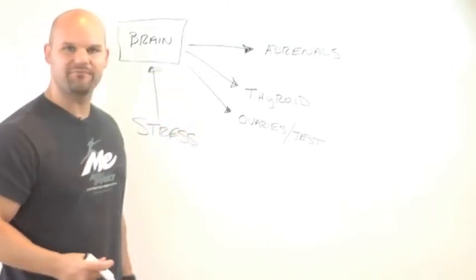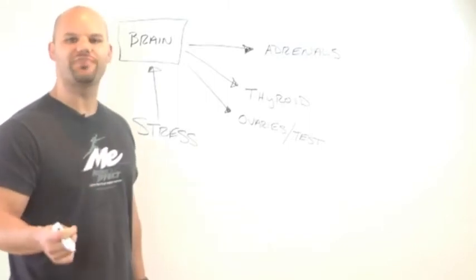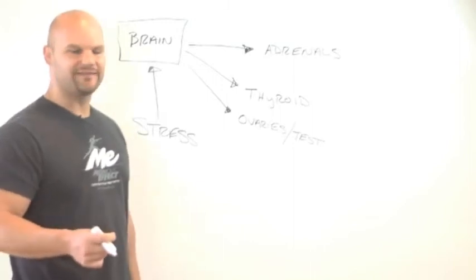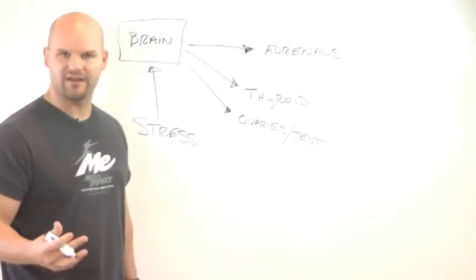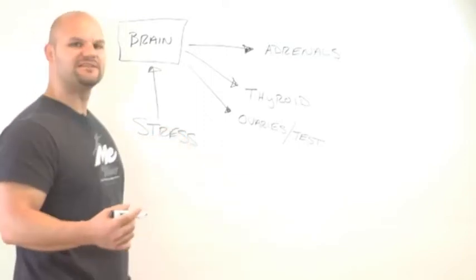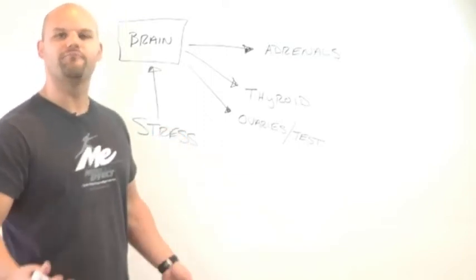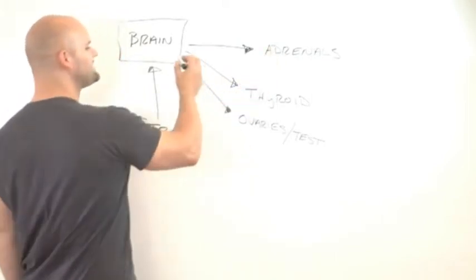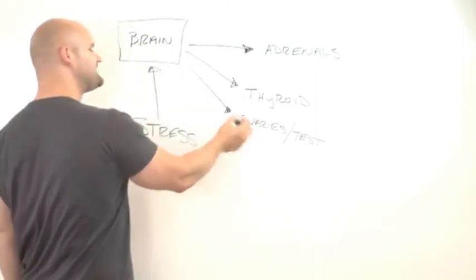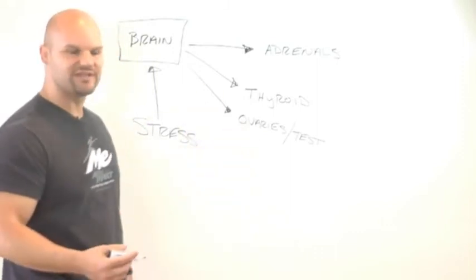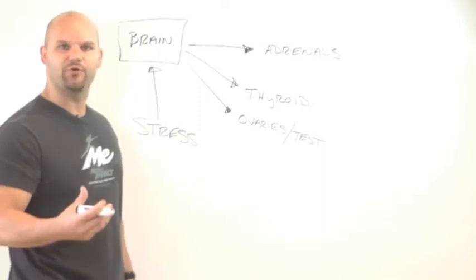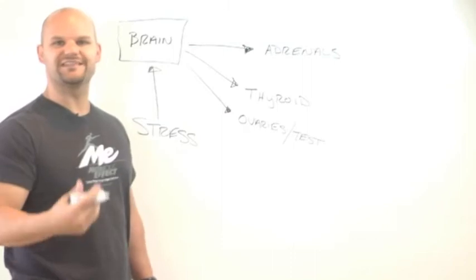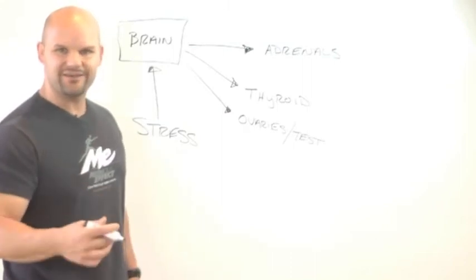And what this stress begins to do is impact the brain. At the base of the brain stem, there is a control center called the hypothalamus. And that hypothalamus communicates with another gland that's close to the brain called the pituitary. And then the pituitary and hypothalamus together communicate with your metabolic engine, so to speak. They send signals to your adrenal glands. They send signals to your thyroid glands. They send signals to the ovaries and testicles. And what we call this is the HP, hypothalamus, pituitary, adrenal, thyroid, and ovarian or testicular axis.